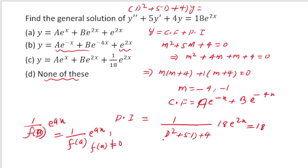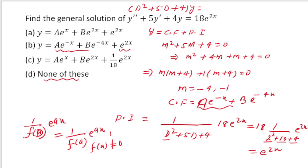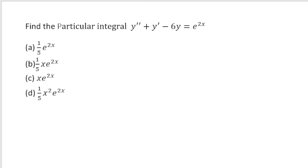Substituting D = 2: 1/(2² + 5·2 + 4) · e^(2x) = 1/(4+10+4) · e^(2x) = 1/18 · e^(2x). Since we have 18 outside, the 18s cancel giving e^(2x). So this is your CF and this is your PI. The correct option is option b.